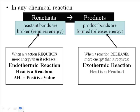Heat is a product of an exothermic reaction, and if you were to look up the delta H, or the change in enthalpy, for an exothermic reaction, you'd see that it's a negative value. So all chemical reactions are either endothermic or exothermic, because you always have to put energy in — but it's a question of how much energy do you get back out when you form those new products.